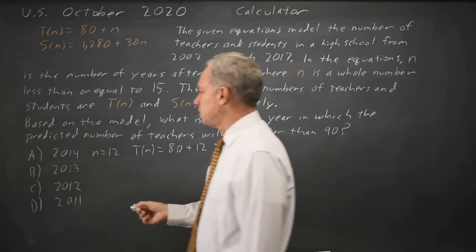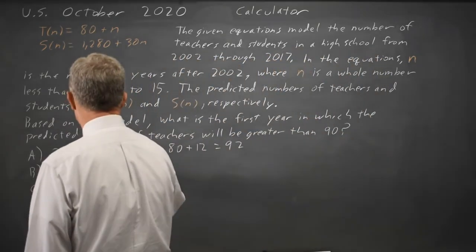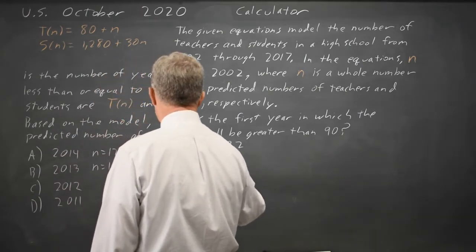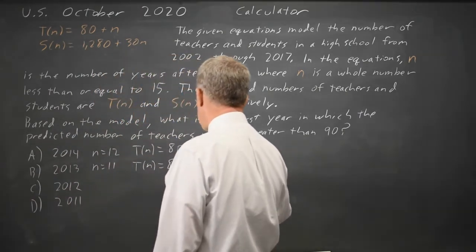But they're asking for the first year. 2013 is N equals 11, T of N equals 80 plus 11, which is also greater than 90, that's 91.